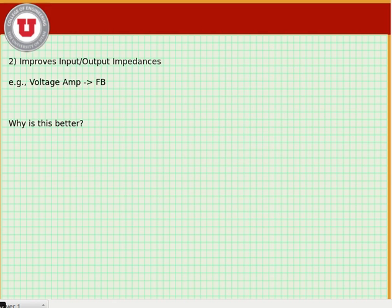Another thing that feedback does is it improves the input and output impedance conditions of the circuit. For instance, if we look at what we want from a voltage amplifier, what feedback will do is feedback will increase the input resistance and it will decrease the output resistance.